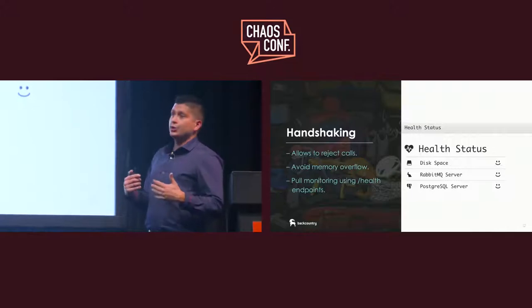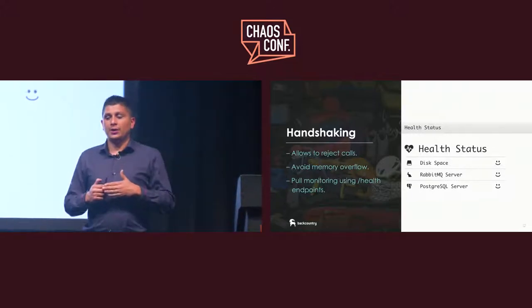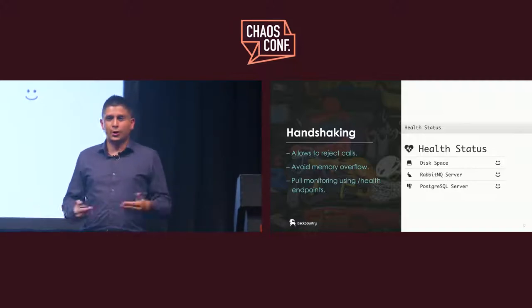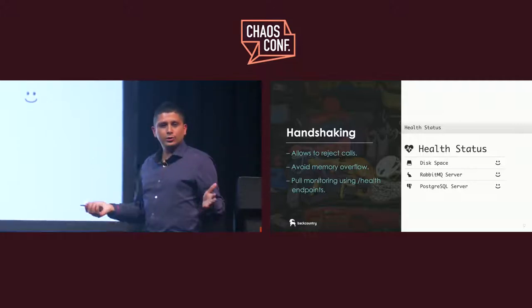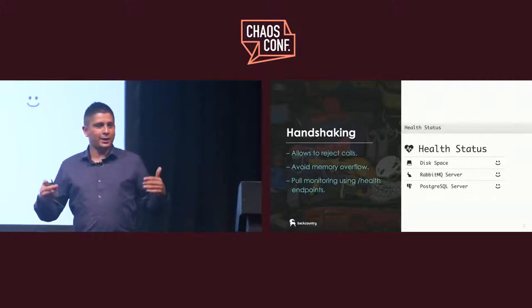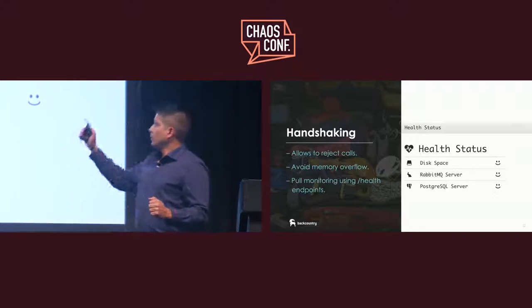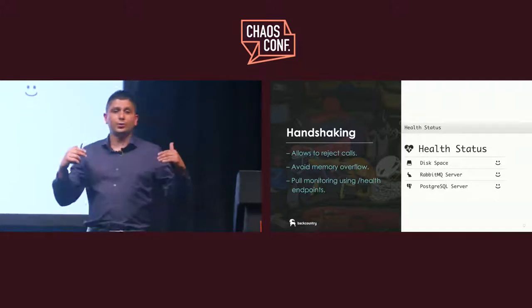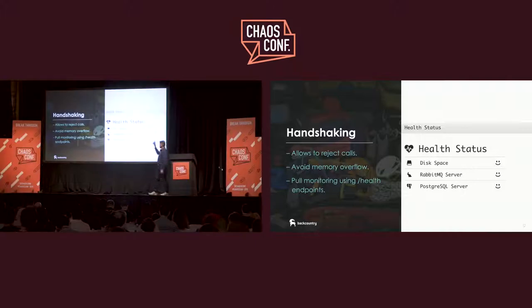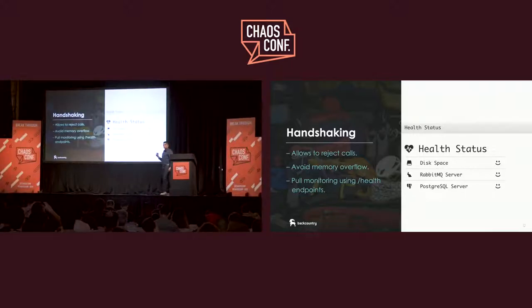Handshaking is a way to know if an API can initiate a conversation with another dependency — the API says 'I'm about to start talking to you, are you healthy? Can I initiate a load of a certain size?' Here's an example using Spring Boot: a health endpoint that not only tells you if the service is up or down, but also reports on dependencies, disk space, Redis connection, and Postgres connection — because if you're down, you won't understand why without knowing if you have internal problems.